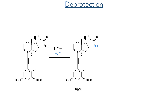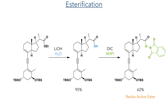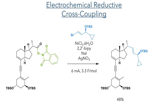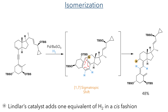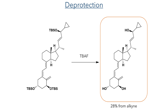With all of the rings now in place, they then needed to install the functionalities on the side chain of the D ring. The ester was first hydrolyzed using lithium hydroxide and a redox-active N-hydroxyphthalimide ester was formed as before using DIC. This ester was then reacted in another electrochemical reductive cross-coupling, this time coupling it to the cyclopropanated side chain fragment bearing a brominated alkene. With this now installed, they then carried out a semi-hydrogenation of the alkyne using Lindlar's catalyst. This promotes the cis addition of hydrogen gas to the alkyne, forming an alkene intermediate which then undergoes a 1,7 sigmatropic shift, isomerising the triene system in a similar manner to that seen in biological systems. The final step was a simple deprotection using TBAF to produce the target calcipotriol in a 28% yield from the alkyne.